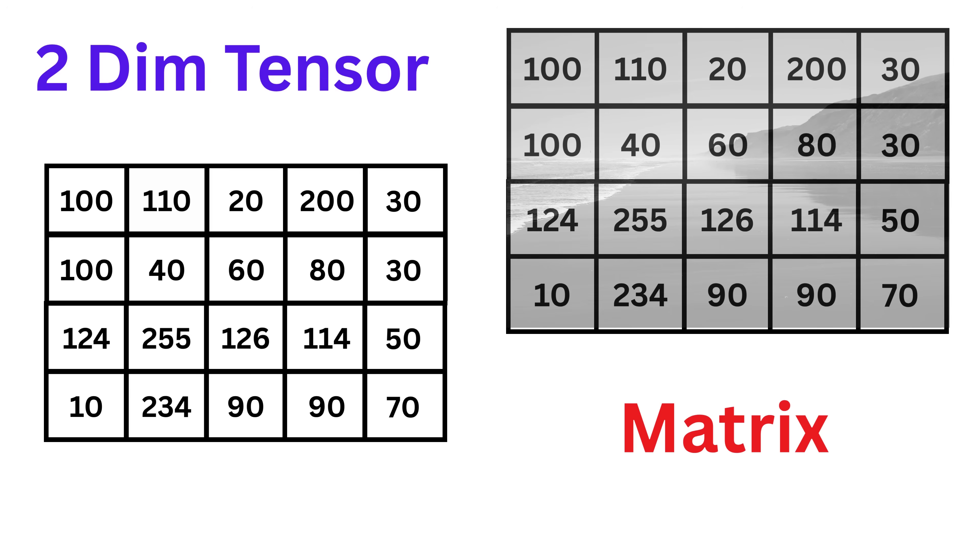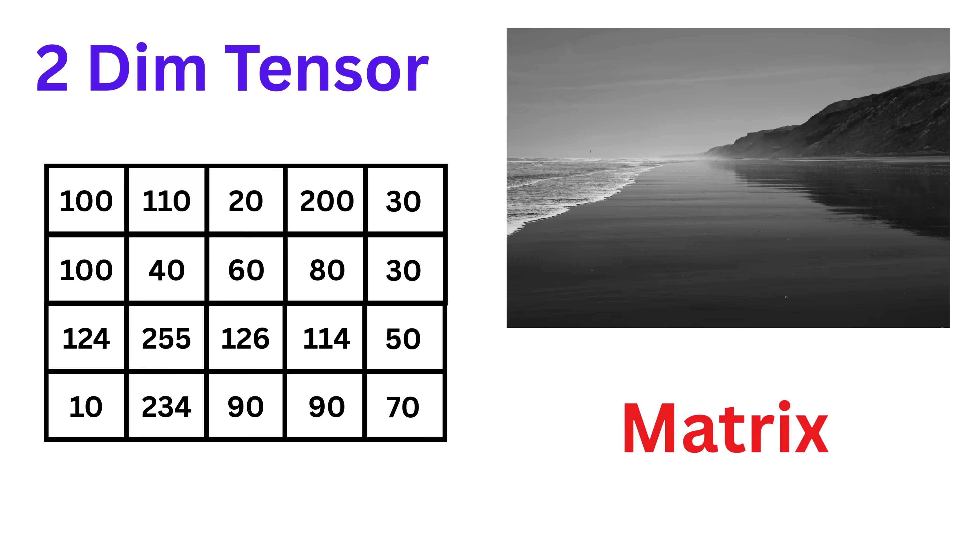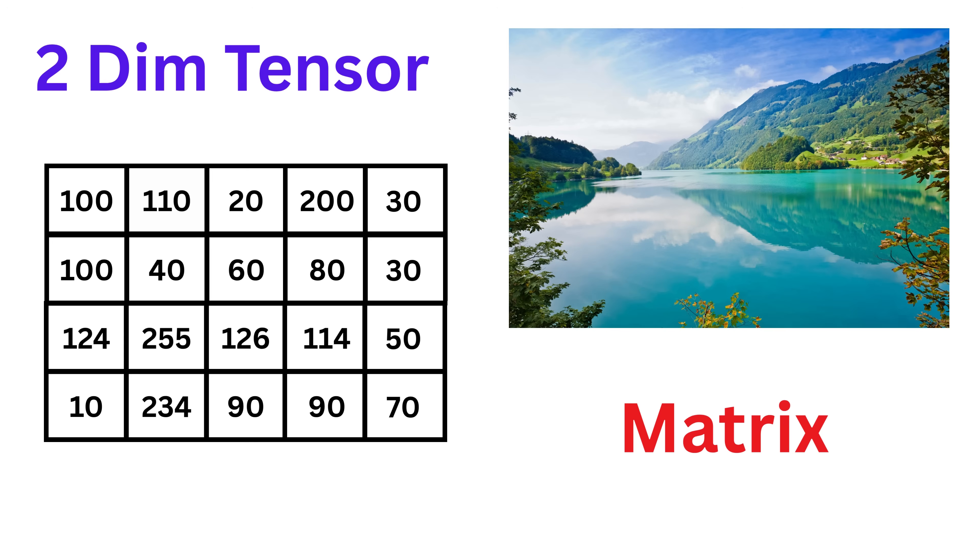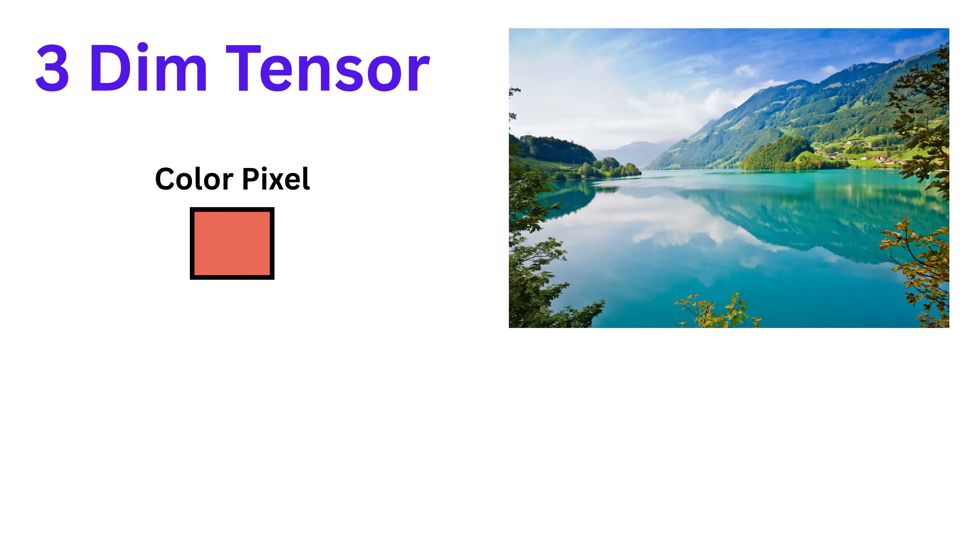Until now, everything we talked about used grayscale pixels, only brightness and no color. But what if we want to store color images, like a real photo from your phone camera? Each color pixel isn't just one number. It's made of three different values. One for red, one for green, and one for blue.